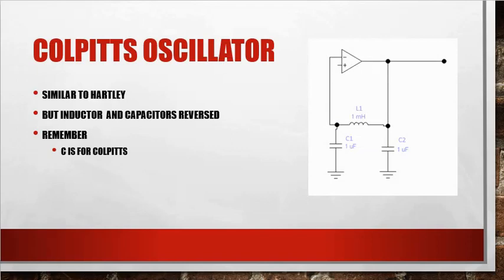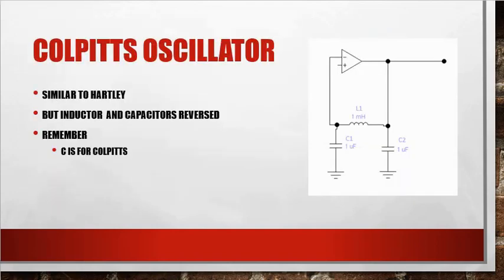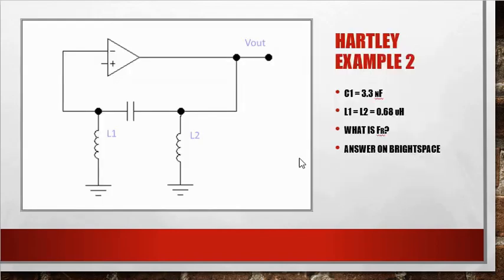Third oscillator we'll look at is called the Colpitts oscillator. It's similar to a Hartley and basically what he did is he just swapped the inductors and capacitors. Now, for Colpitts, easy way to remember it is Colpitts starts with a C and we got lots of capacitors. We got our capacitors here, Hartley had inductors.